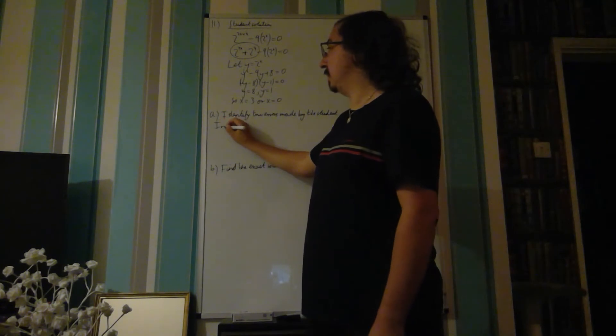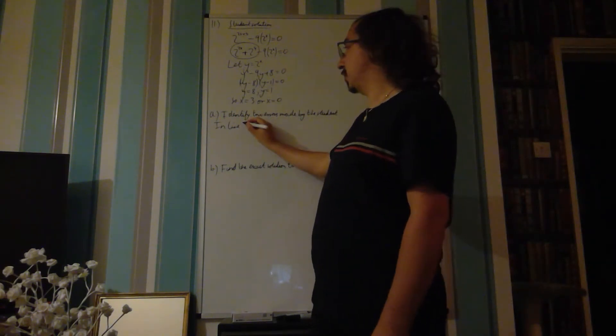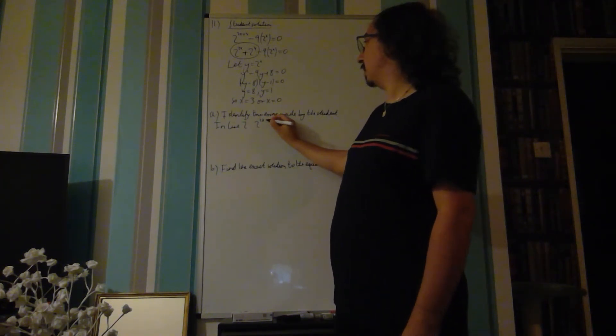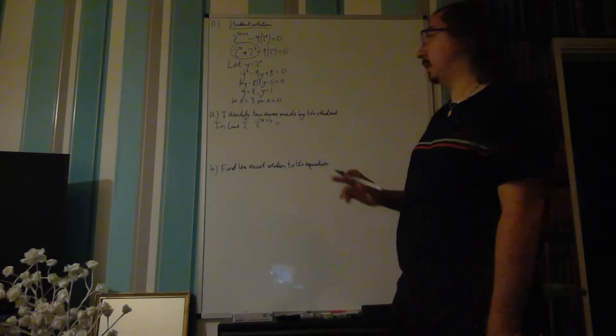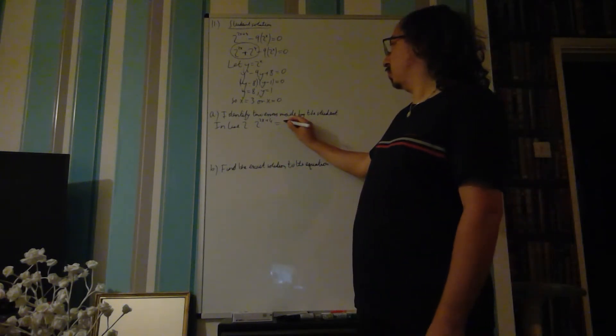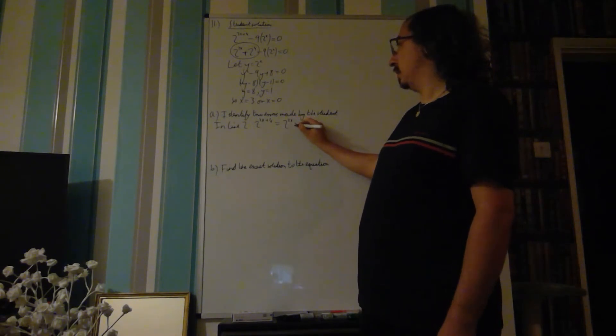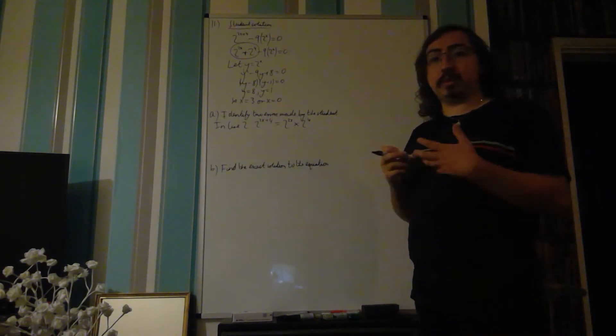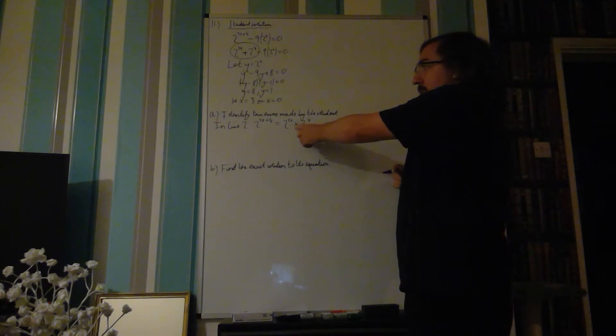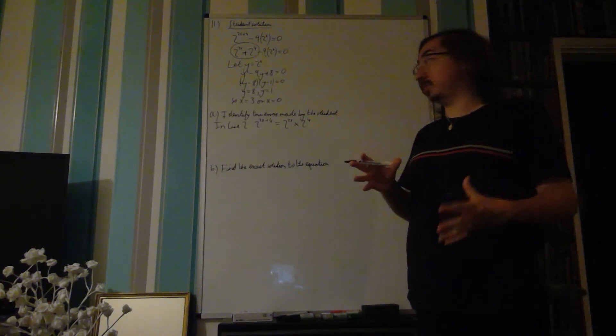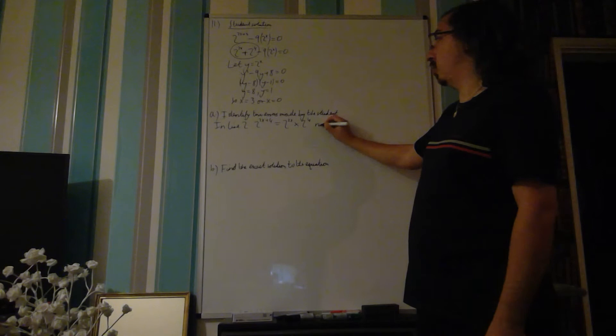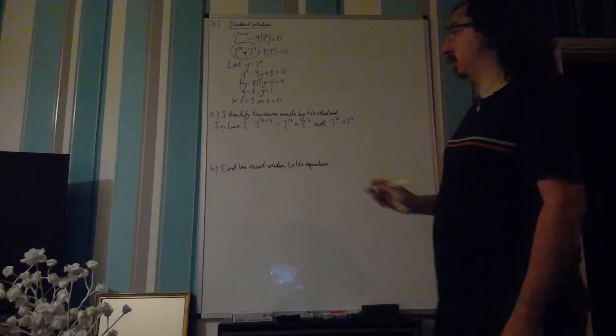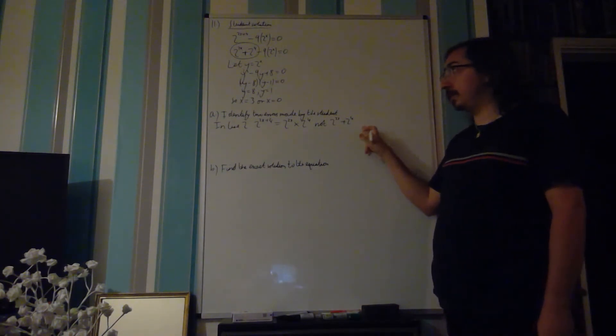So we can state in line 2 of the solution, 2 to the 2x plus 4 should be equal to 2 to the 2x times 2 to the 4. If the power is with an addition then the original one before it was combined must be a multiplication, so if you split it, the multiplication should be there. Not 2 to the 2x plus 2 to the 4. So that's the first mistake.